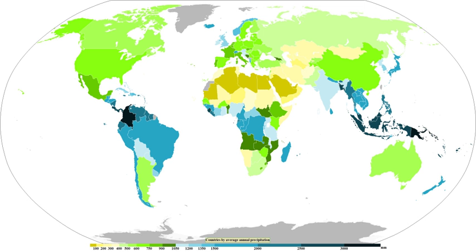The quantitative precipitation forecast (QPF) is the expected amount of liquid precipitation accumulated over a specified time period over a specified area. A QPF will be specified when a measurable precipitation type reaching a minimum threshold is forecast for any hour during a QPF valid period. Precipitation forecasts tend to be bound by synoptic hours such as 0000, 0600, 1200 and 1800 GMT. Terrain is considered in QPFs by use of topography or based upon climatological precipitation patterns. Starting in the mid to late 1990s, QPFs were used within hydrologic forecast models to simulate impact to rivers throughout the United States.